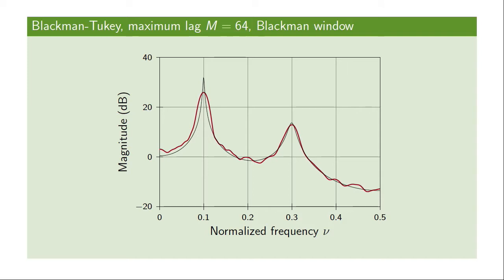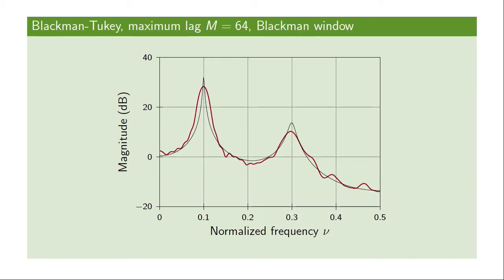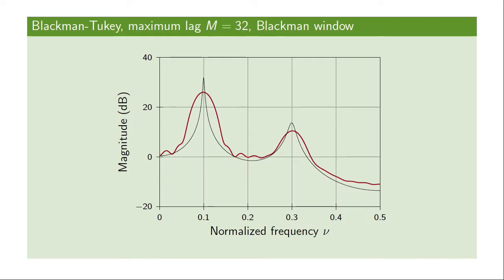In this example, the Blackman-Tukey method is computed with a maximum time lag of 64 samples for the same AR2 process, using the Blackman-Tukey window to window the autocorrelation estimate. The resulting estimate (red) quite accurately captures the true power spectral density. Reducing the maximum time lag from 64 to 32 samples would further reduce variance at the expense of resolution — spectral peaks would be wider, but spectral leakage would also be reduced.